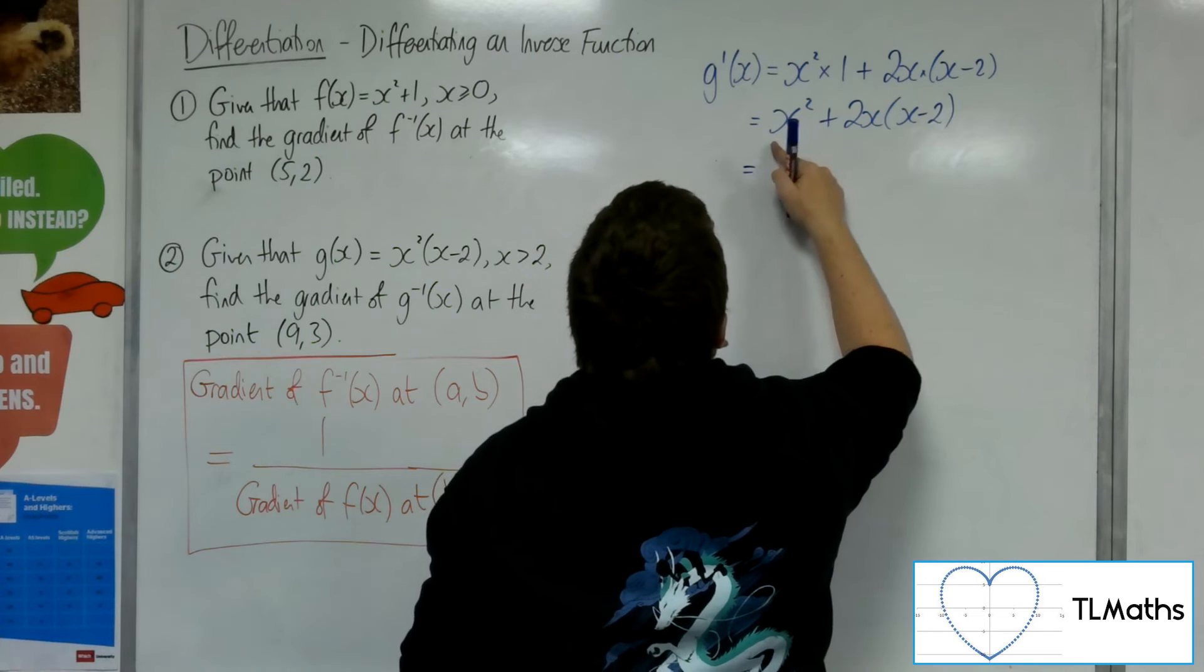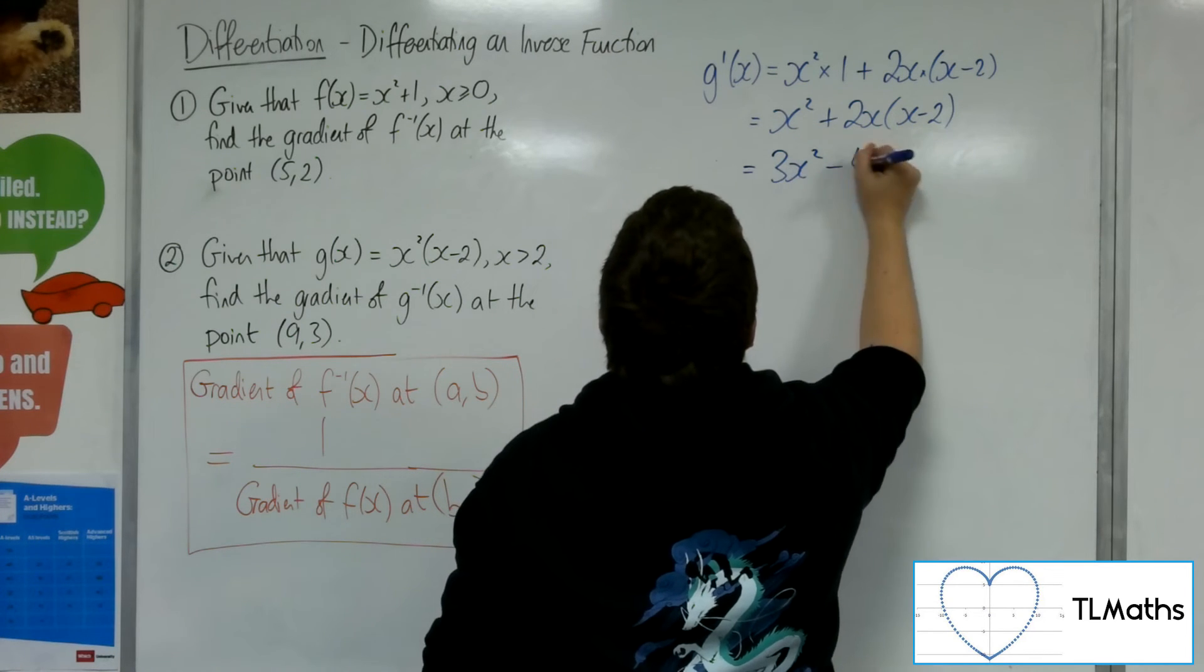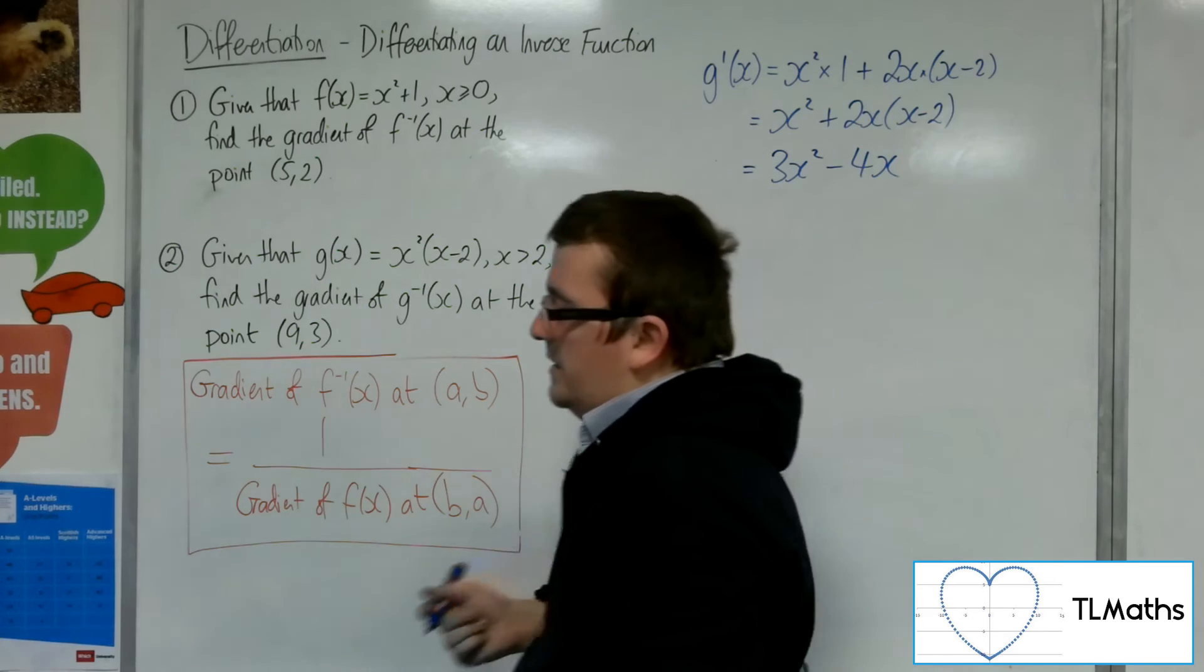Okay, I can multiply that out. x squared plus 2x squared, so that's 3x squared minus 4x. Okay, so that's g prime.